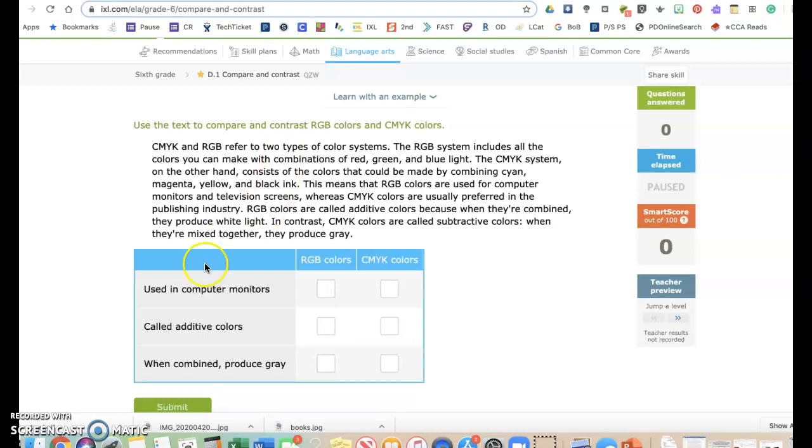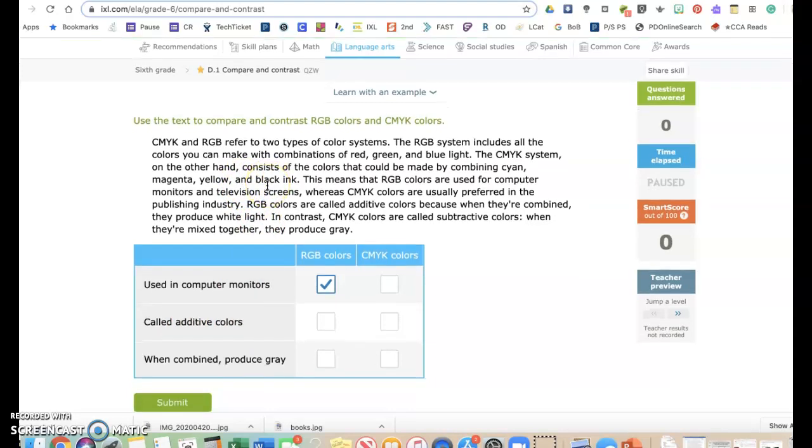So, which ones are used in computer monitors? I'm going to look back here, and it says, this means that RGB colors are used for computer monitors. So, I'm going to click RGB colors. Which ones are called additive colors? What I usually do, like this one, I looked for computer monitors. I'm going to look for the word additive or additive colors when I skim to see if I can find it.